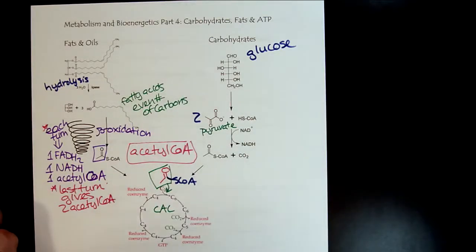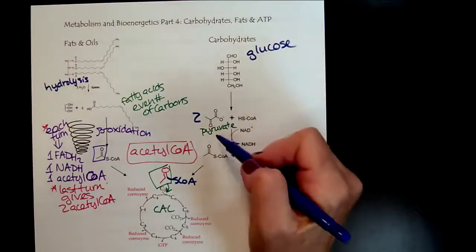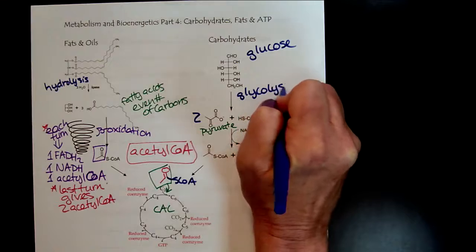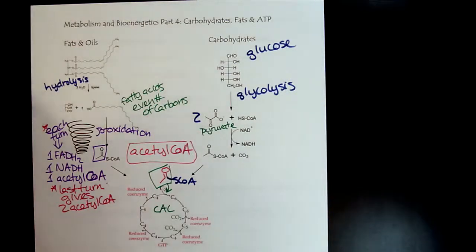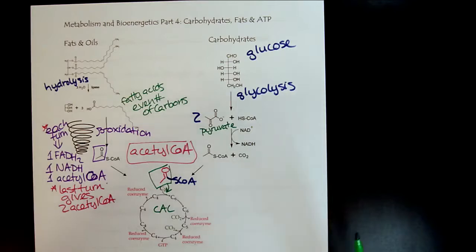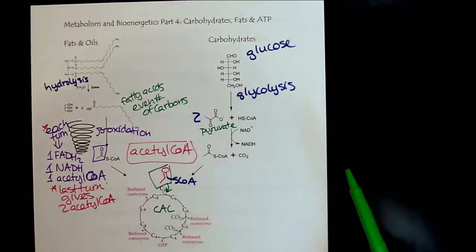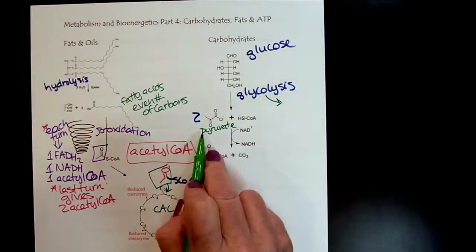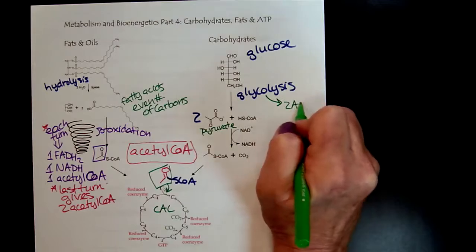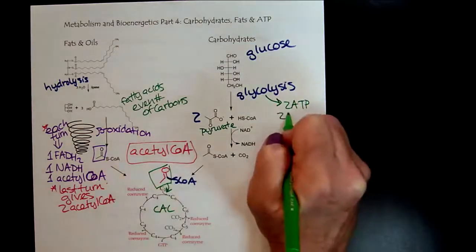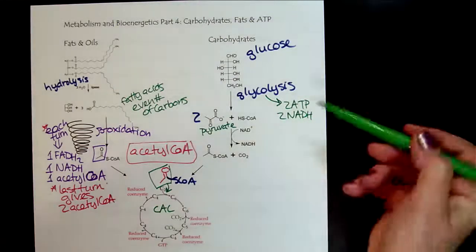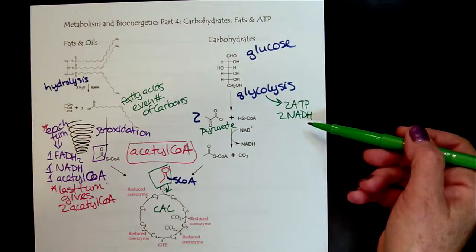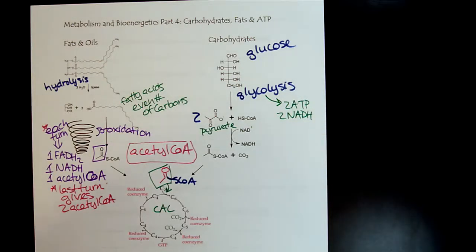So what's that process called? So glucose, one glucose forming two pyruvates, that is called glycolysis. And remember that takes place in the cytoplasm, or cytosol of the cell, and so no mitochondria are needed. So during glycolysis we learned that in addition to the two pyruvates, we get a net gain of two ATP and two NADHs. So here's some energy produced right away, and then here is some more reduced coenzymes that can go directly into the electron transport chain.